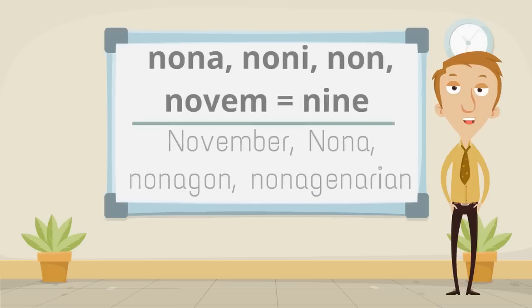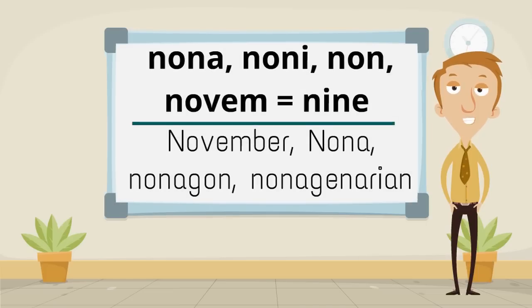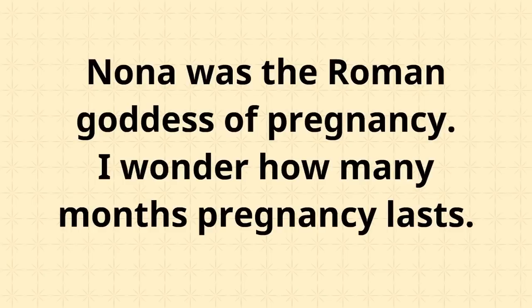Nona, None, Non, and Novem mean nine, making November, nona, nonagon, and nonagenarian. Nona was the Roman goddess of pregnancy — I wonder how many months pregnancy lasts.